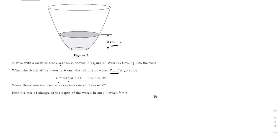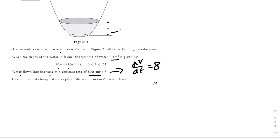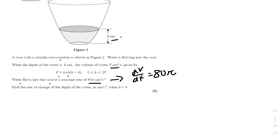So we can gather some information from the question. The water flows into the vase at a constant rate of 80π cm cubed per second. The unit cm cubed represents the volume, and because the water flows into the vase, we know that dV/dt will be equal to 80π cm cubed per second. So we have to find the rate of change of depth, which is dh/dt, and we can do dh/dt = dh/dV × dV/dt.